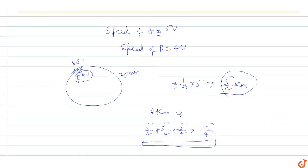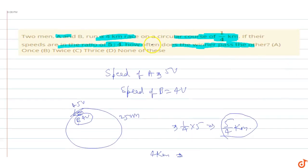The total distance is 4 km. How often does the winner pass the other is 3 times. So option C will be the correct option.